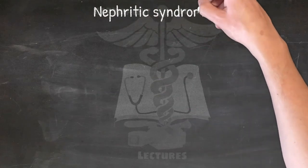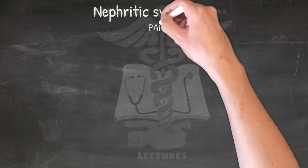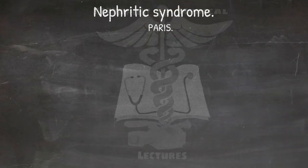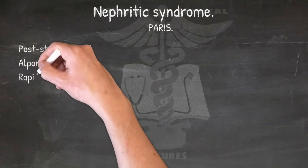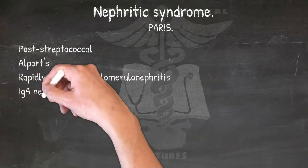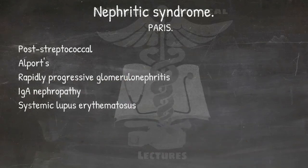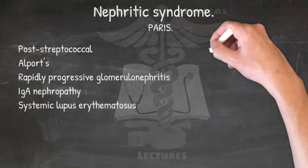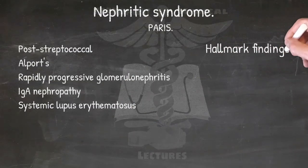Nephritic syndrome — glomerular diseases commonly presenting as nephritic syndrome: PARIS — Post-streptococcal, All ports, Rapidly progressive glomerulonephritis, IgA nephropathy, and Systemic lupus erythematosus.